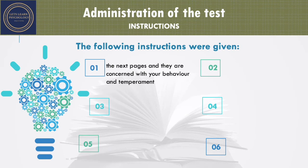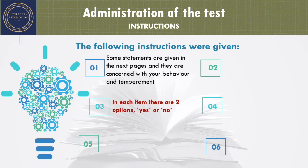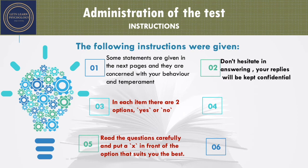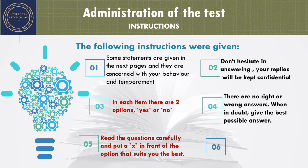Once rapport formation is done and you have handed over the test to your subject, the following instructions are to be given: 'Some statements are given in the next pages concerned with your behavior and temperament. In each item there are two options — yes or no. Read the questions carefully and put a cross in front of the option that suits you best. Don't hesitate in answering; your replies will be kept confidential. There are no right or wrong answers.'